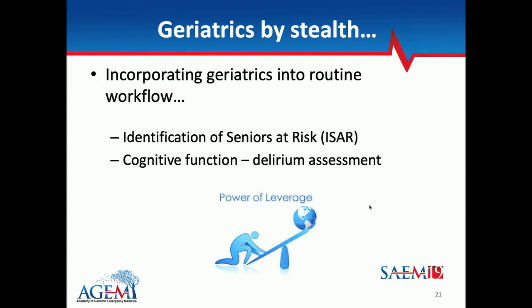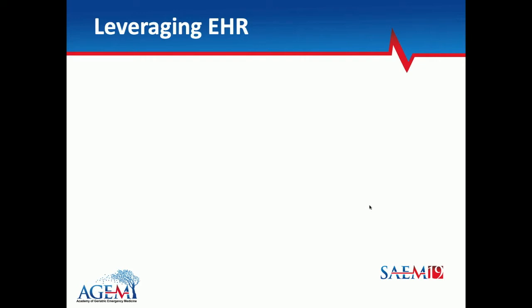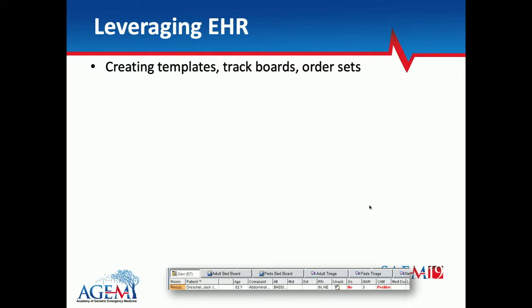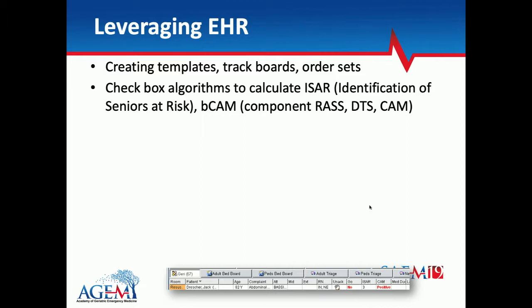The first place to begin is leveraging your EHR. There's probably not a single one of you working in an ED that still uses paper. Start in the electronic health record by creating templates, tracking boards, and order sets that are part of the workflow and geriatric-specific for your clinicians. More importantly, if you can create screening tools and algorithms using checkboxes — the ISAR as a checkbox algorithm, the BCAM as a delirium screening assessment tool — incorporating those right into your screening system. At Mount Sinai, we have a trackboard specifically for patients 65 and older with all the relevant things we're doing for them.